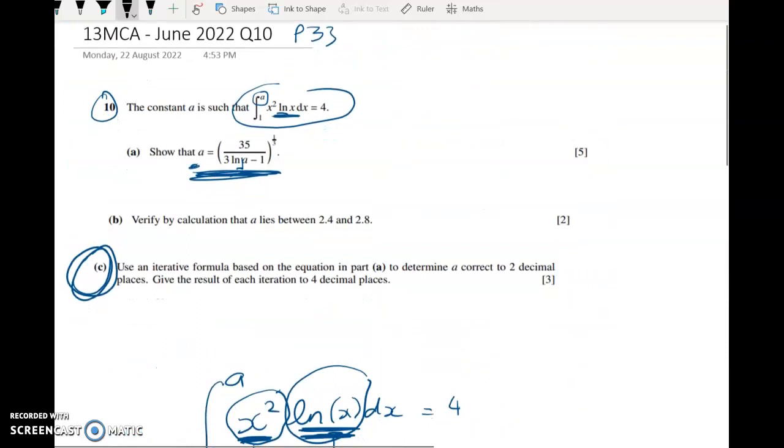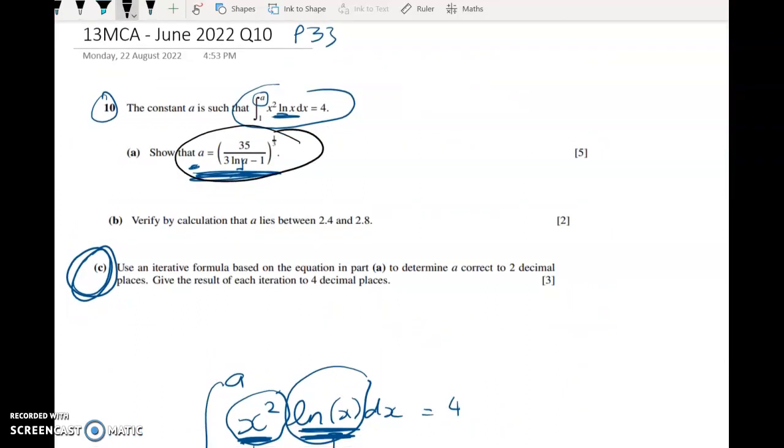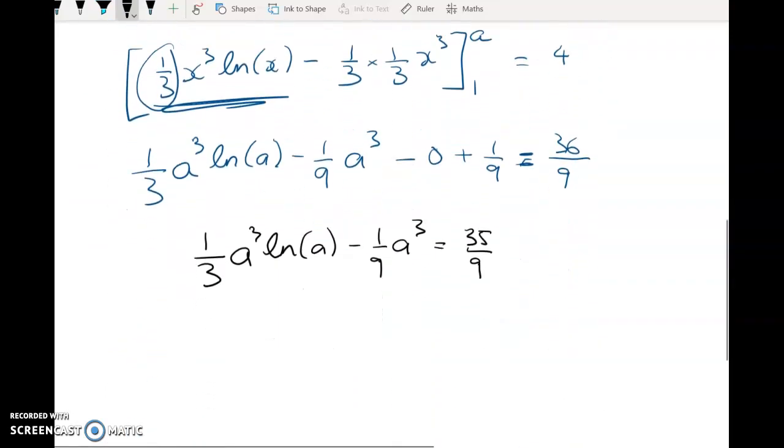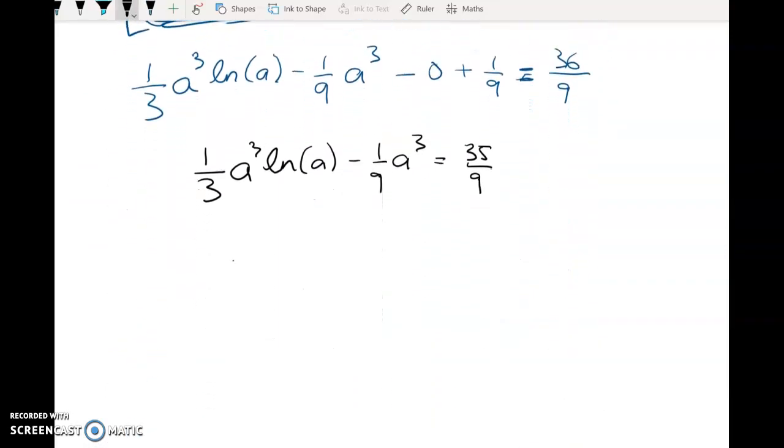Look where we're trying to get to. We want to get to A is equal to this. So you can see A is equal to blah blah cube root. So we're going to make A cubed the subject. So A cubed into, let's see, we've got, let's do 3 ninths here.